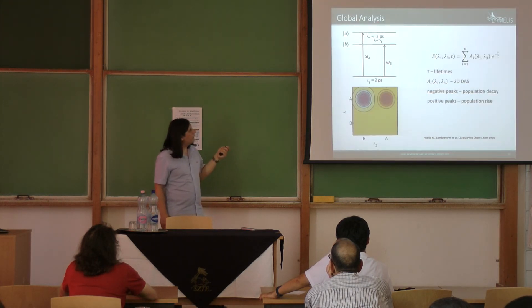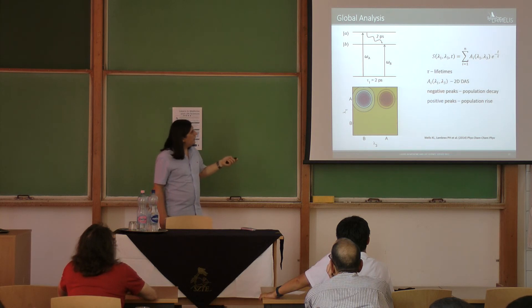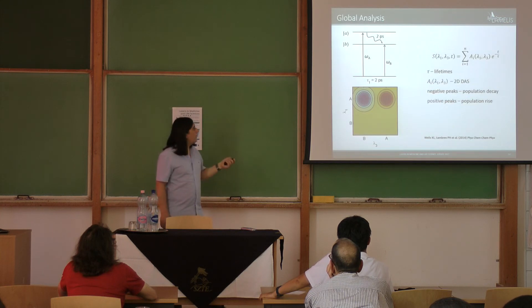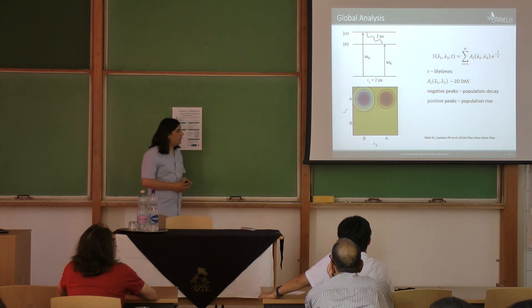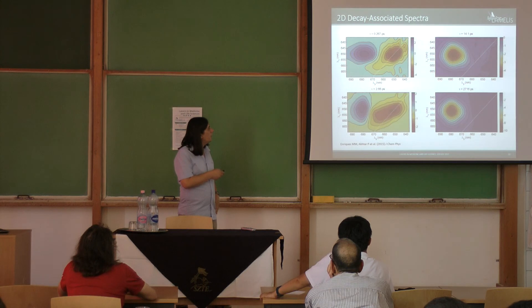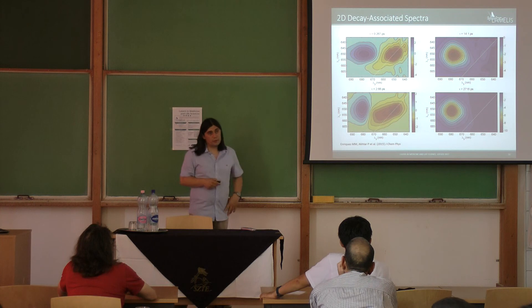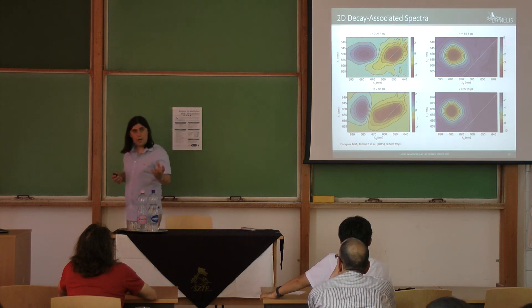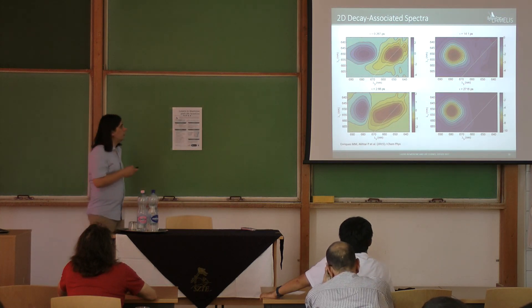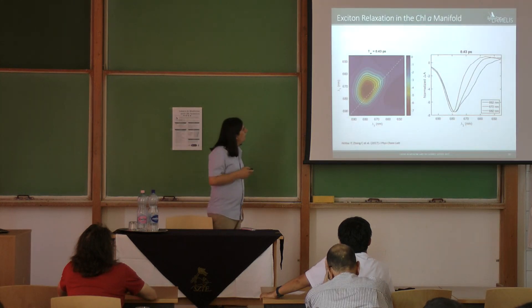What we do is we take global analysis, we calculate exponential lifetimes from all these traces, and then we get what is called decay-associated spectra. From this spectra we can get correlations again, one frequency with another frequency. So we can tell from where energy comes, where it goes.